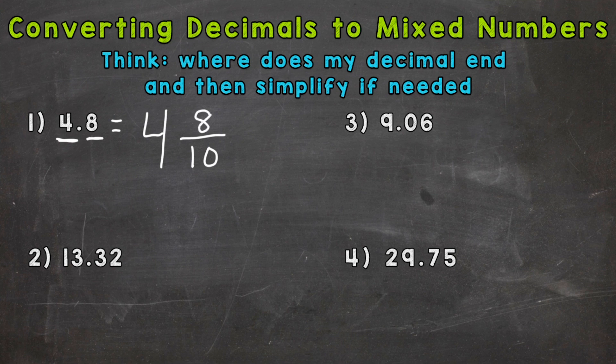So four and eight tenths is how you would say this decimal. Four and eight tenths is how you would say that mixed number. They are equivalent. One's a decimal, one's a fraction though.